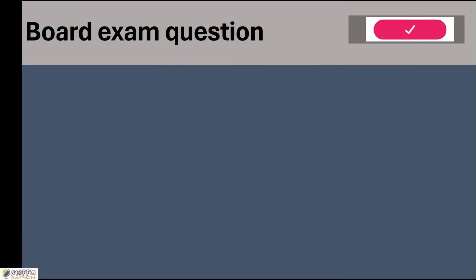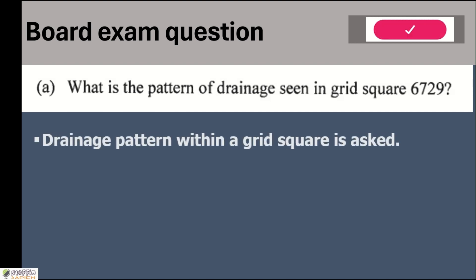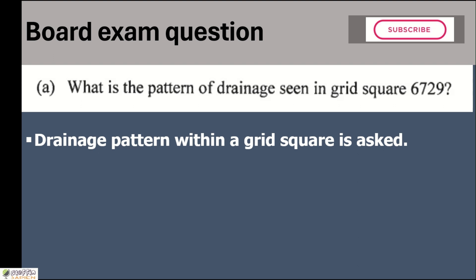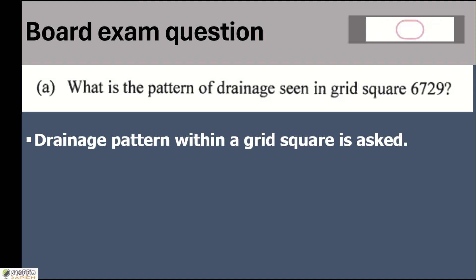How does the question come in board exams? A sample question is: what is the pattern of drainage seen in grid square 6729? What I want to tell you is that drainage pattern is asked within one grid square — it is very rarely that we get a question asking the drainage of a large area. Most of the time, the question asks for the drainage pattern within one grid square. We know that one grid square is one square kilometer in area.